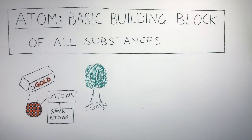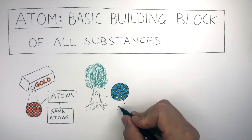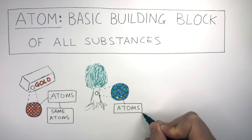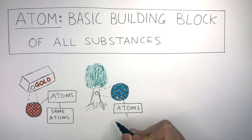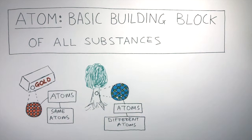Let's look at a tree as another example. A tree is more complicated than a bar of gold. The tree is still made of atoms, but because there are different substances which make up the tree, there must be different atoms which make up the tree. Therefore, this particle diagram represents in a very simple way how there are different atoms which make up this tree.